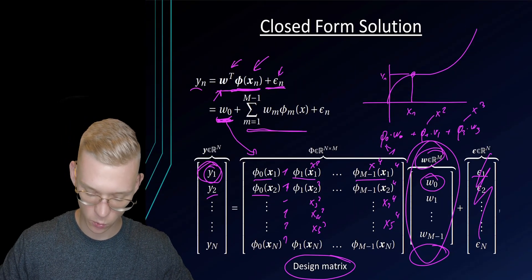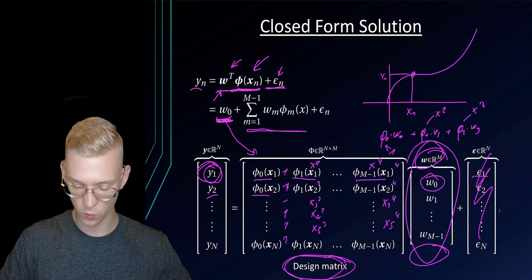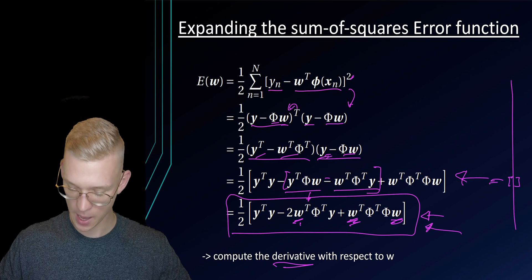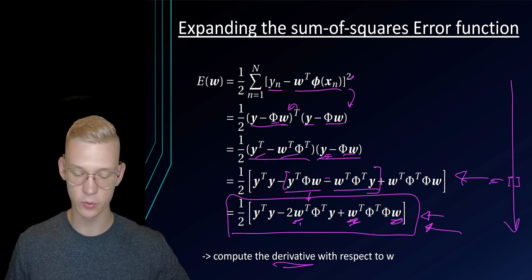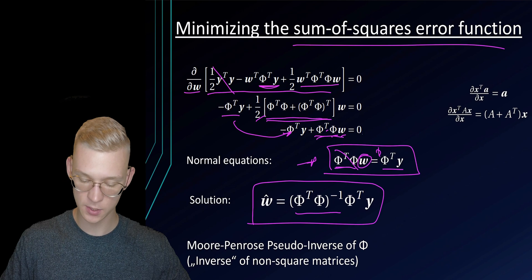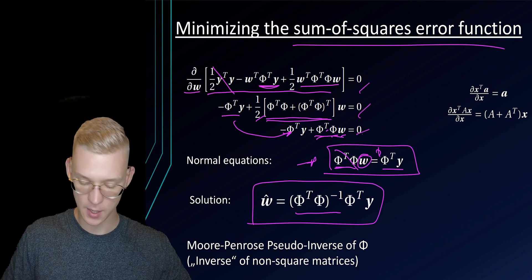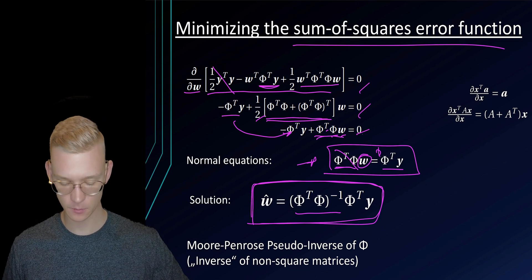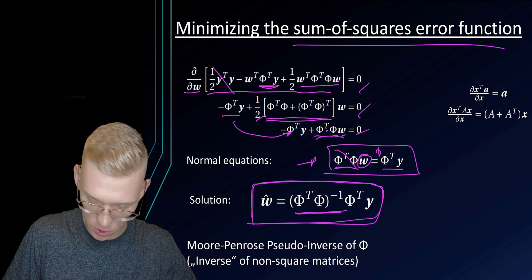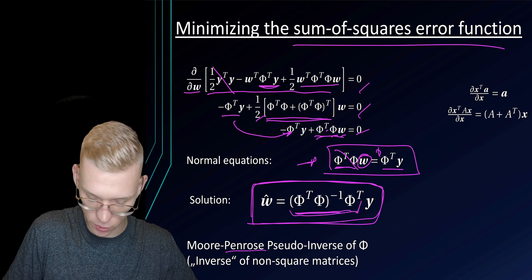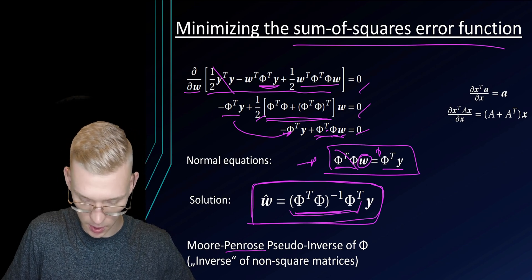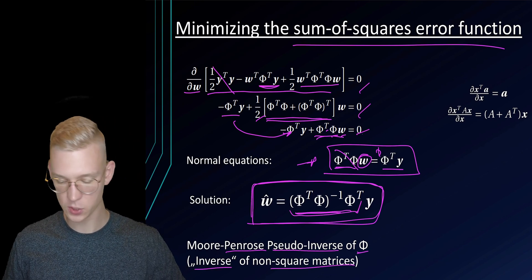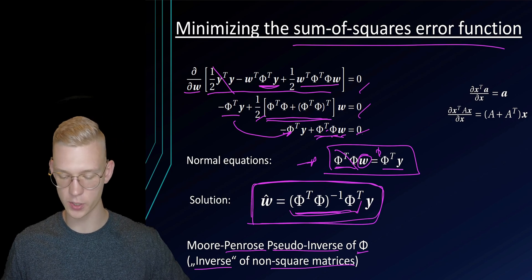So again, we designed our matrix with our functions, then we had our weights. We expanded basically our error function. We took the derivative, set it to zero, and now we know which weights we should choose to get the minimal error. We call this matrix the Moore-Penrose pseudo-inverse of our matrix because it's the inverse of a non-square matrix.